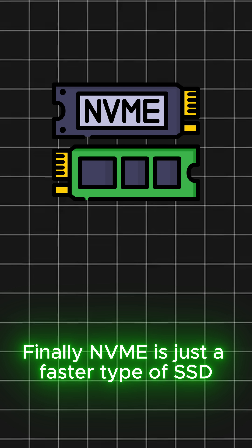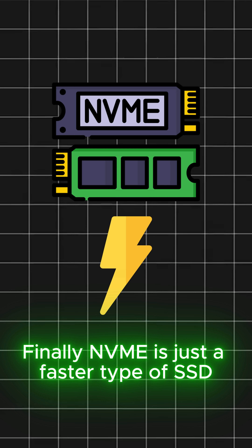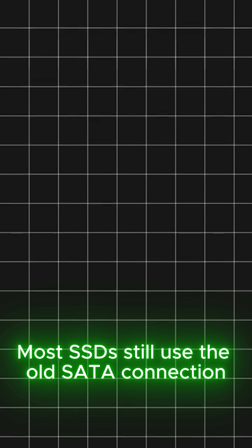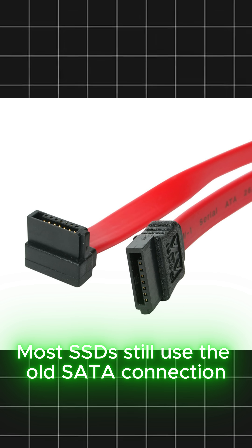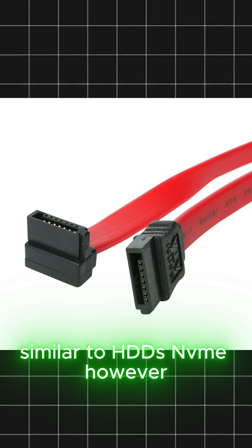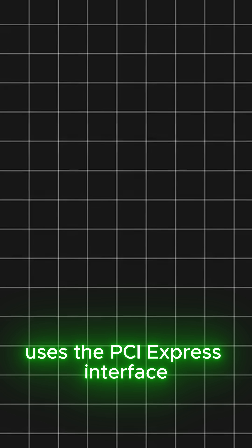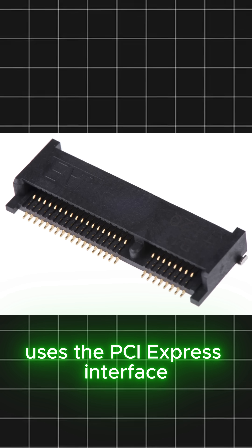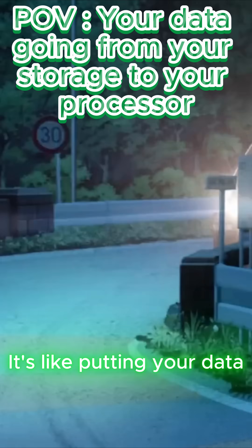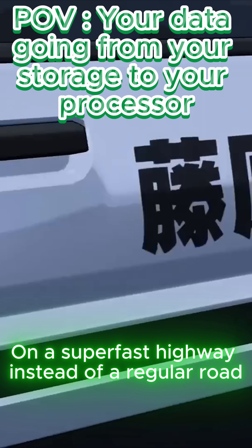NVMe is just a faster type of SSD. Most SSDs still use the older SATA connection, similar to HDDs. NVMe, however, uses the PCIe interface — it's like putting your data on a super-fast highway instead of a regular road.